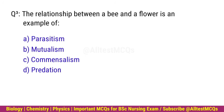Q3. The relationship between a bee and a flower is an example of? Right option is B. Mutualism.